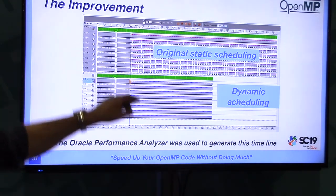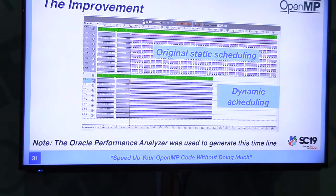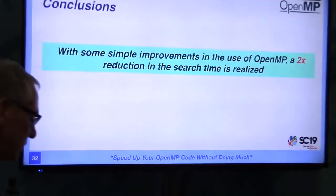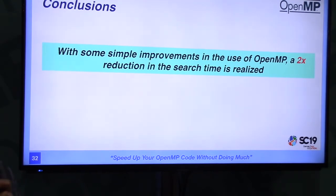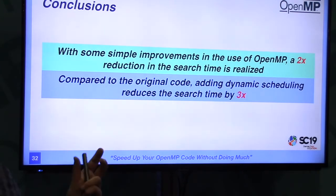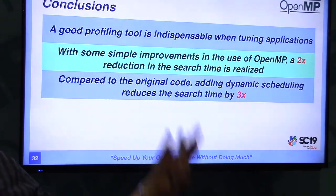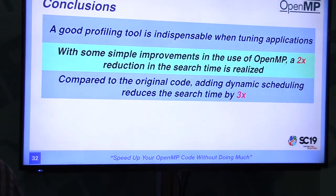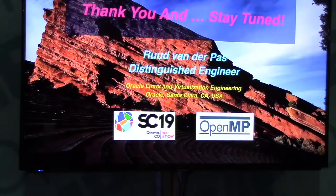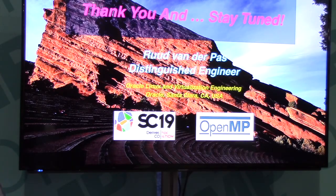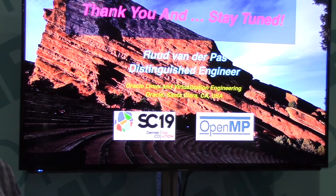Sanity check: on eight threads the load is nicely balanced instead of all those gaps — it's doing the right thing. Conclusions: first, 2x improvement was easy to get from fixing barriers and parallel regions. Then recognizing this as an irregular workload and using dynamic scheduling gave a total of 3x performance improvement. You really have to do this with a profiling tool — how else would you know? Never forget to use a profiling tool. You're all going to look back at your own code and think, oh boy.